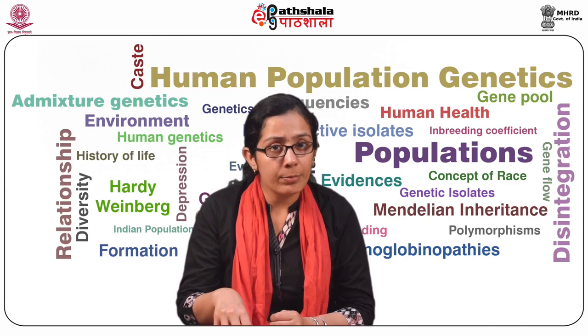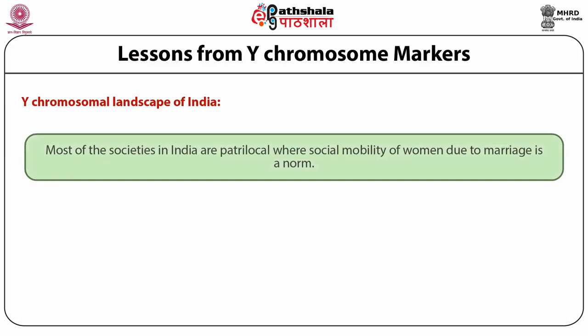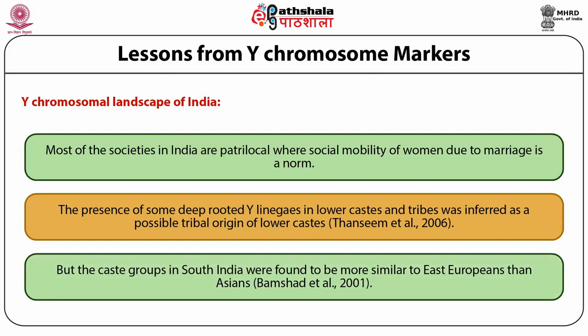Y-chromosome landscape of India: Most societies in India are patrilocal, where social mobility of women due to marriage is a norm. This is reflected in Y-chromosomal evidence showing a lack of male-mediated gene flow between groups. Comparison of Y-chromosome markers between castes and tribes shows the uniqueness of these two groups. The presence of some deep-rooted Y lineages in lower castes and tribes was inferred as a possible tribal origin of the lower caste. Evidence from Y-chromosomes showed that groups in northern India have close genetic affinities with those of West Asia and Central Asia, while caste groups in South India were found to be more similar to East Europeans.